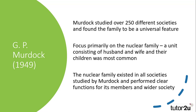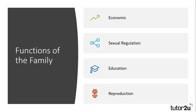In other words, they provided clear functions for the members of the family and for wider society. Murdoch identified four distinct functions of the family across the different cultures he studied: firstly, an economic function, providing resources for the family; secondly, a sexual function, or regulation of sexual activities; a third function was education, primarily into the norms and values of society — what we may consider to be primary socialisation; and finally, the family performs the function of reproduction, of producing the next generation of society.